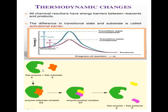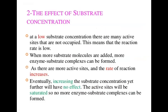As substrate concentration increases while temperature is kept constant, the velocity of the enzyme reaction also increases. If the substrate concentration is very high, it will react with the enzyme more and more, meaning the reaction velocity to form the enzyme-substrate complex is quite high. This is the rate-determining state.